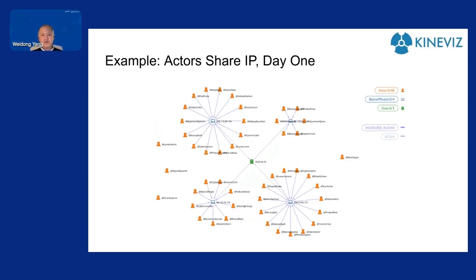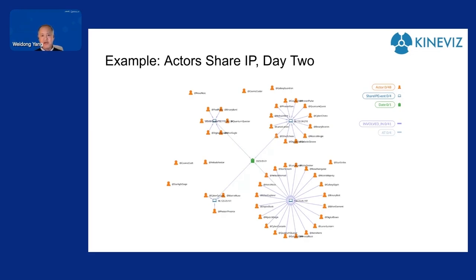The first example is from a platform where you have many users coming from different IPs and different machines. Let's say in day one, we notice there are users sharing an IP. Sharing an IP itself may not be a problem, but it's likely that people sharing an IP all have accounts created by the same person or by a group of related people. A few days later, we look at the same group and notice again there are a lot of people coming from the same IP. A person icon represents a user, the IP is in the data, and I have the date in the middle — representing people sharing an IP on that particular date.